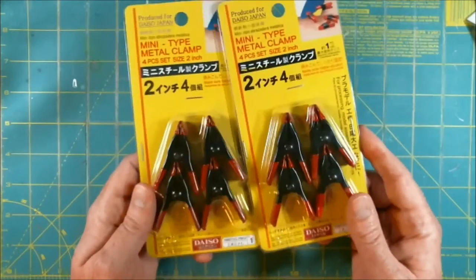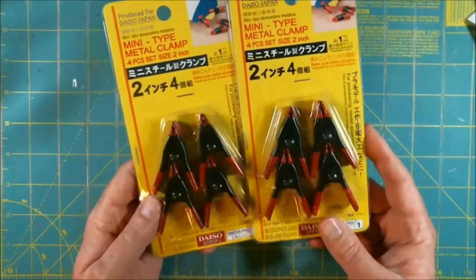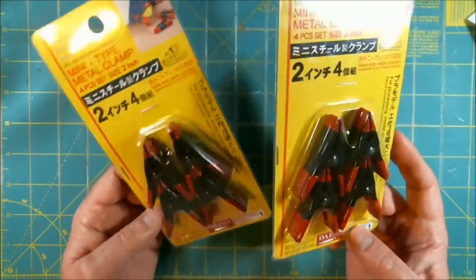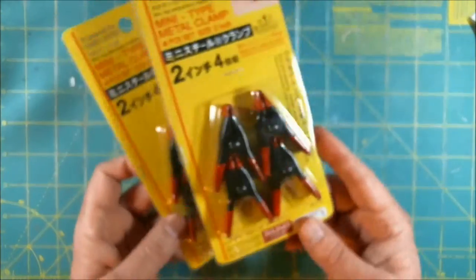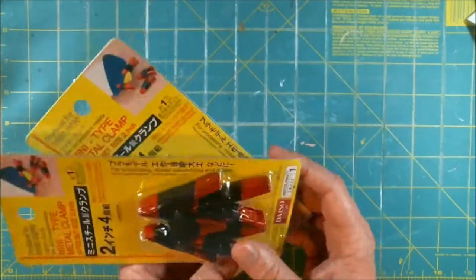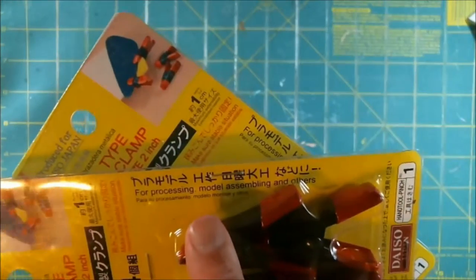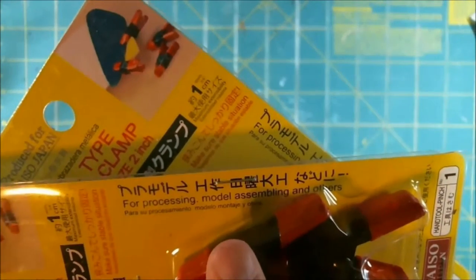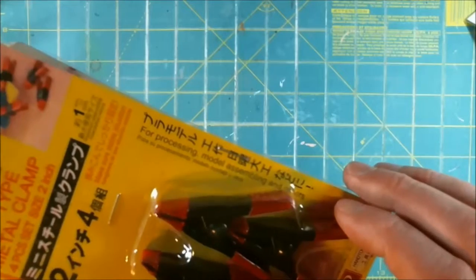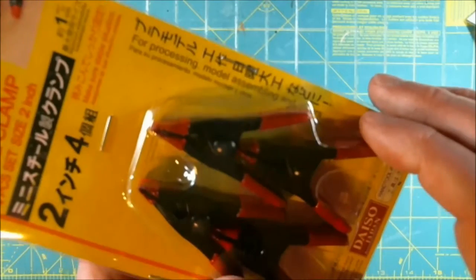And then to kind of close it out, we hit the dollar store, and I picked up, well, dollar store, it's a hundred yen store, so I picked up little sets of four clamps. Dollar each, so less than a dollar each, so good purchase there. It even says for processing model assembly and others. So it works for me.